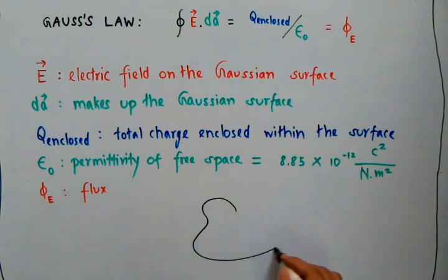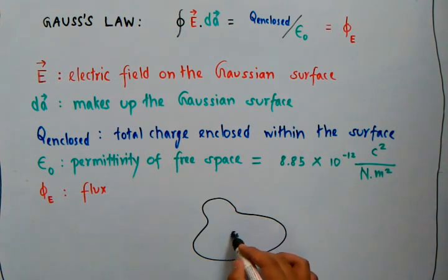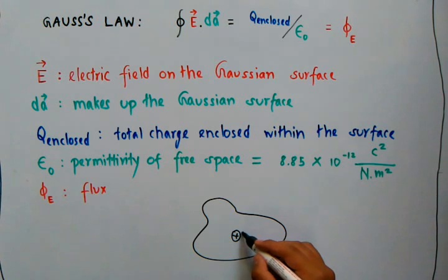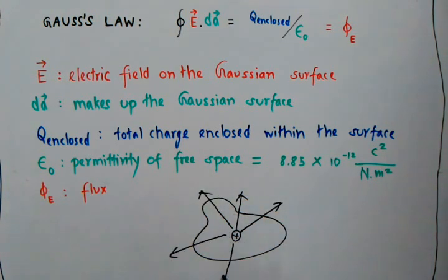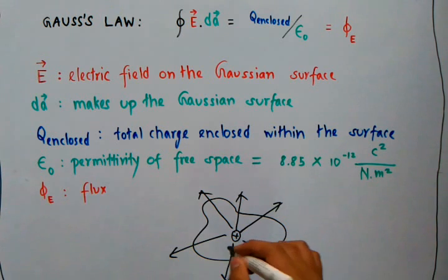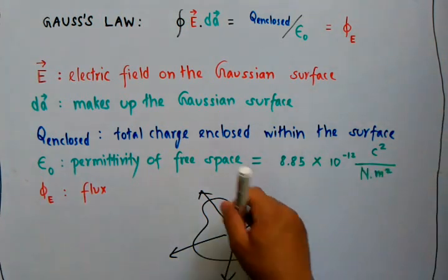Suppose we have a surface of this type and we have a positive charge here. Then the resulting electric field will be of this type. It will point in all directions: above, below, or even in this way.